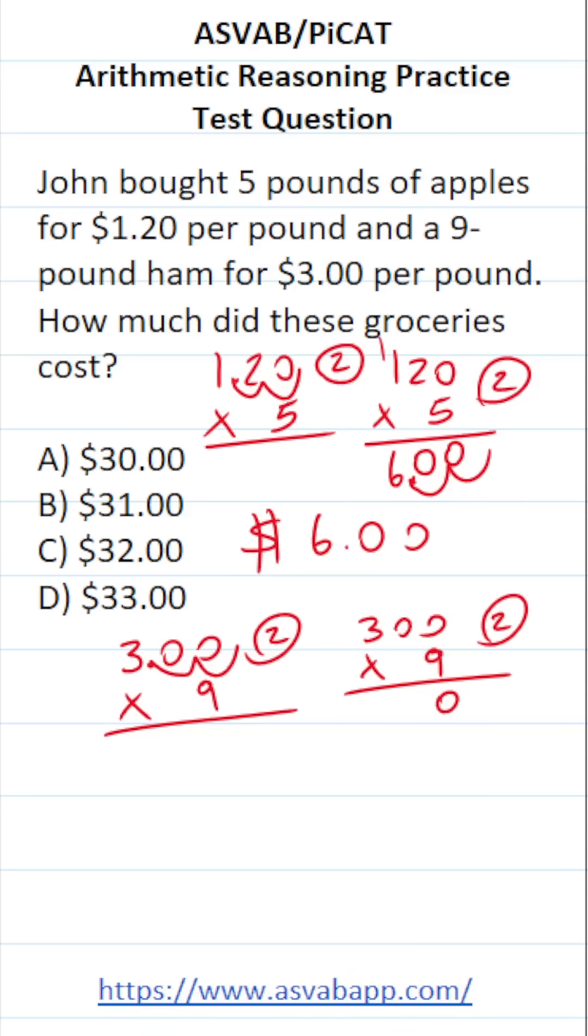Nine times zero is zero. Nine times zero is zero. Nine times three is 27. Bring our two decimals back in. We can see that nine-pound ham costs $27.